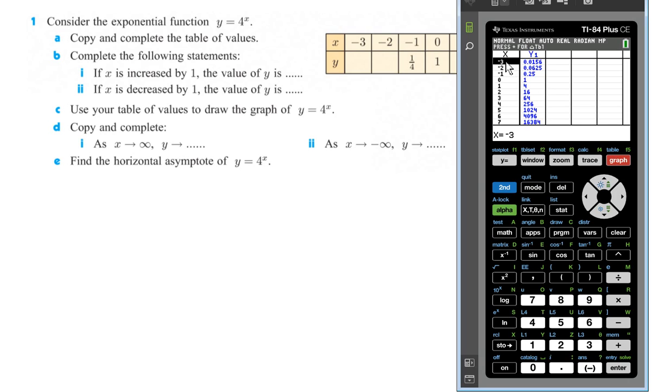Usually your table is defaulted to go up by 1s and it usually starts at 0. Good news is I can scroll up or down as far as I want to see whichever values I want. I can also change what the table changes by each time here. But for right now, it's changing by 1 and that's what we want.